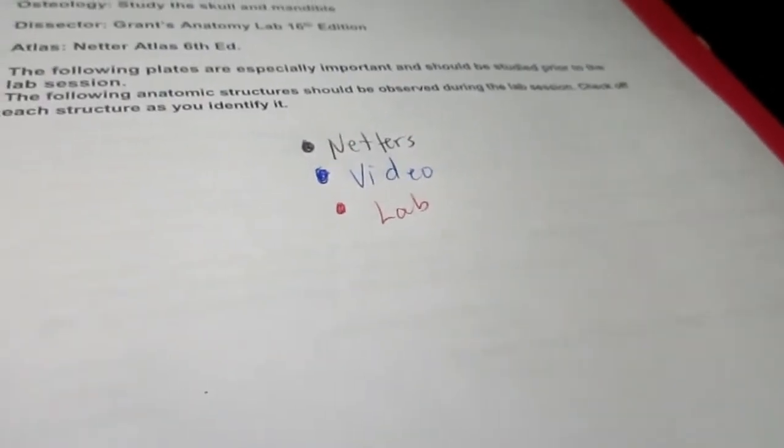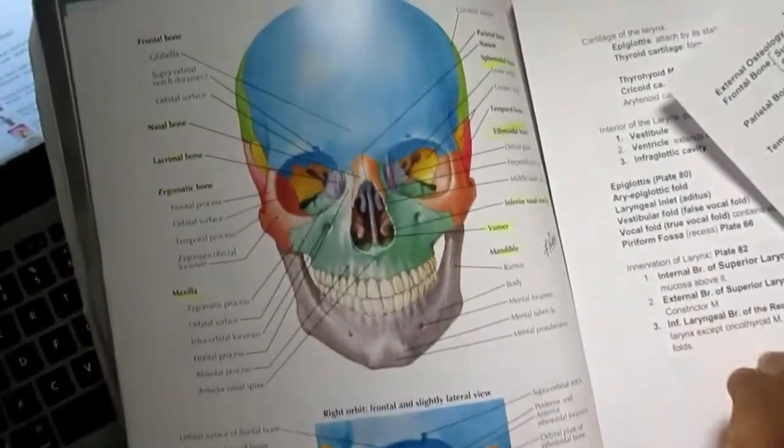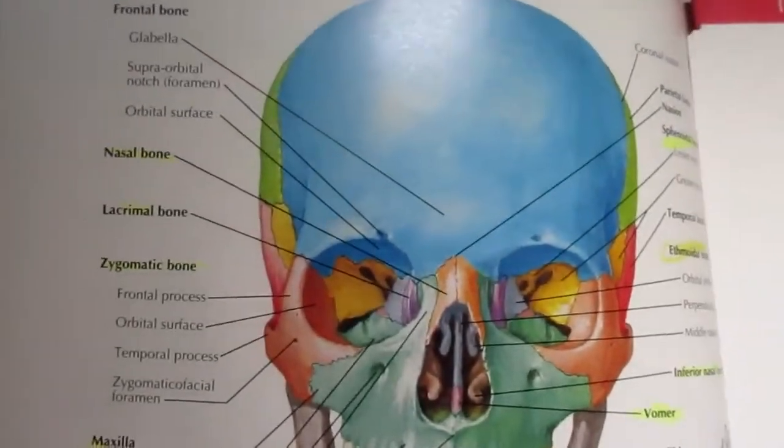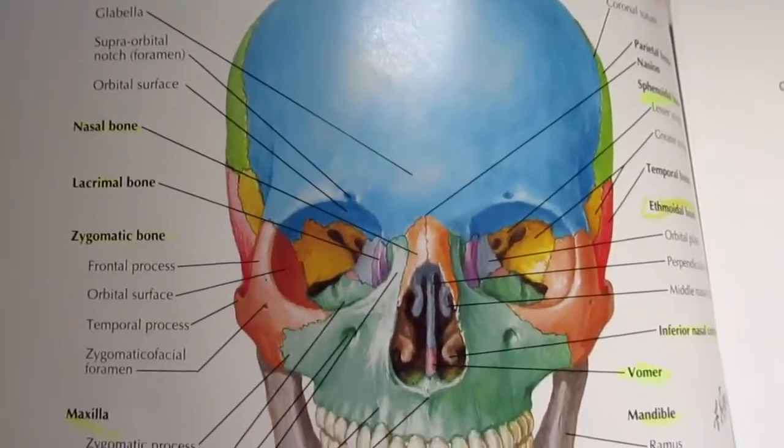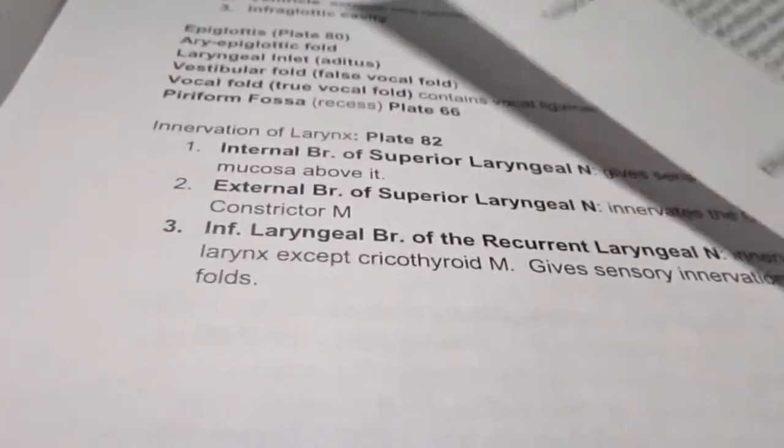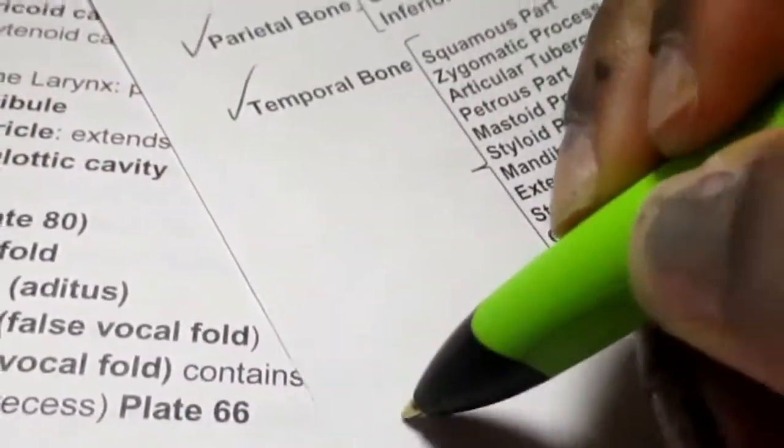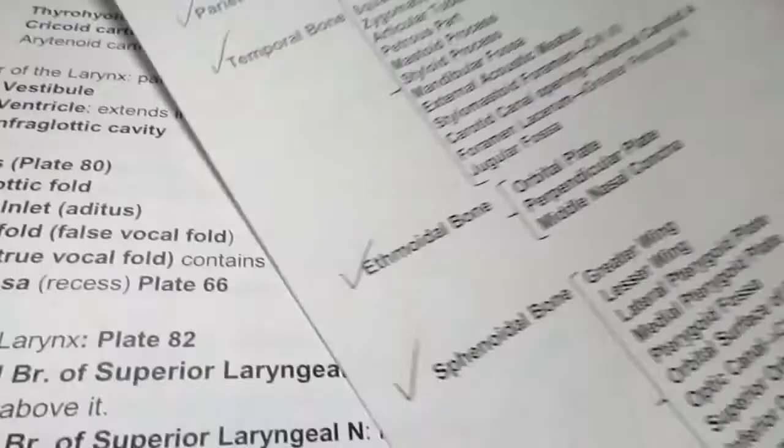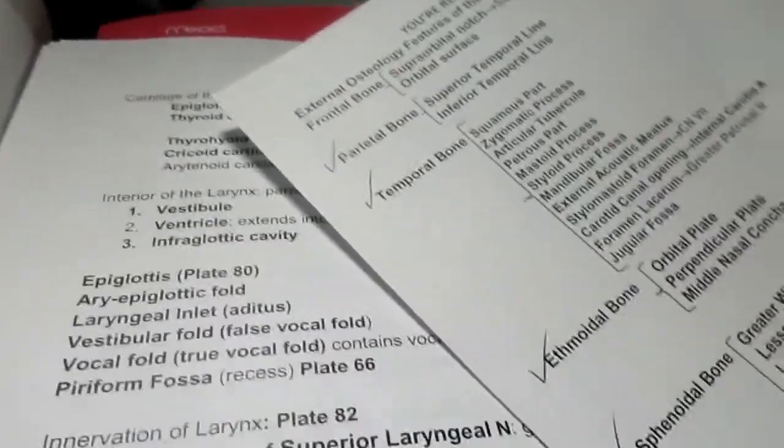For instance, I'm looking at the skull in Netter's and we see the frontal bone, nasal bone, lacrimal bone right there. I'm going to check those bones off with my black ink, and I just continue doing that for all of the structures that I need to see in Netter's.